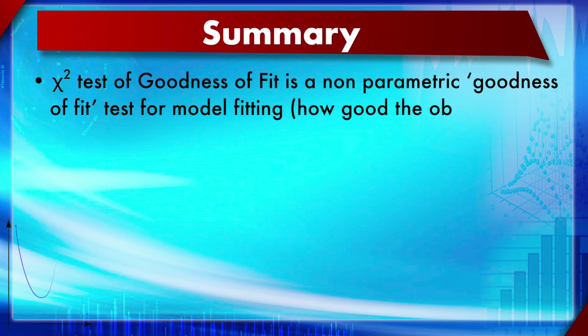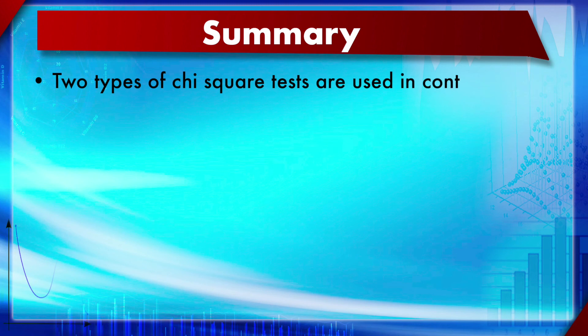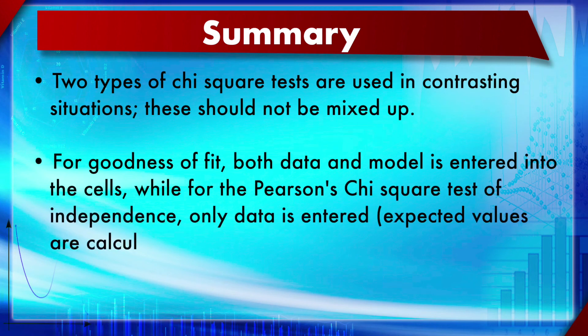In summary, the chi-square test of goodness of fit is a non-parametric test for model fitting — how well observed data fits a model — and is a type of regression analysis for categorical data. The key distinction: for goodness of fit, both data and the explicit model are entered into the calculation, whereas for Pearson's chi-square test of independence, expected values are calculated from the data itself.